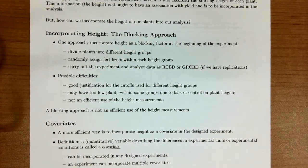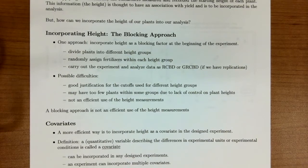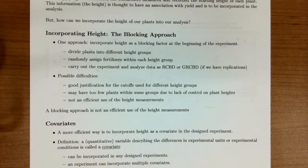Remember, this is when we have replicates. The only issue with taking this approach is that it's very difficult to judge the cutoffs for the different height groups — what do we consider small, medium, or tall height? That's one difficulty of taking a continuous factor and turning it into a discrete factor. Another issue is that maybe some groups wouldn't have enough plants in them, since we can't control the starting height of plants. So this isn't an efficient way to use our height measurements.